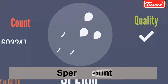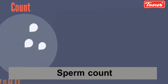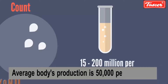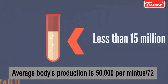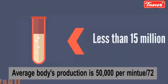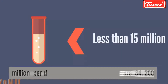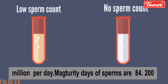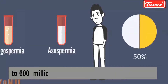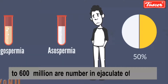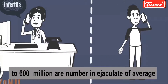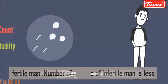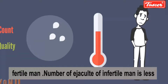Sperm count: the average body's sperm production is 50,000 per minute, or 72 million per day. Maturity days of sperm are 84. The number of sperm in an ejaculate of an average fertile man is 200 to 600 million, while in an infertile man it is less than 50,000.